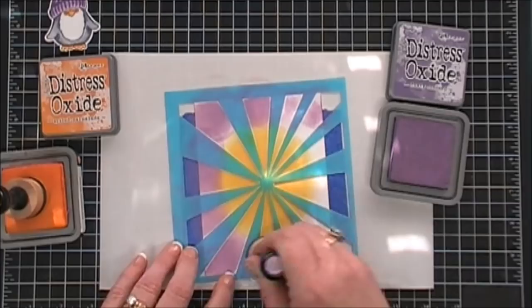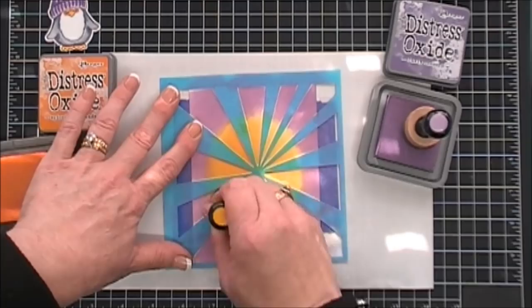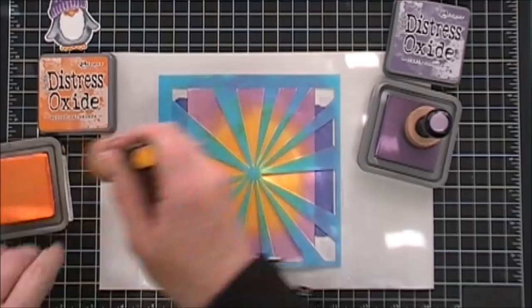My second color, I'm going to go in with some dusty concord, just going around the edges. Once I have that done, I'm going to carefully blend the two inks together. And it did dirty up my blending tool a little bit because of the purple with the orange, but I think the outcome turned out fabulous. It really created a bright and vibrant background.